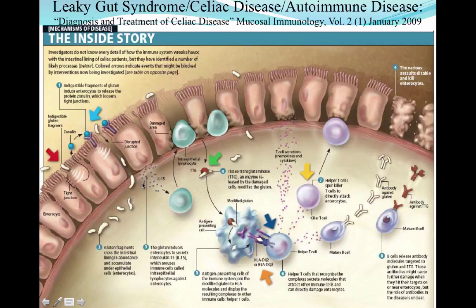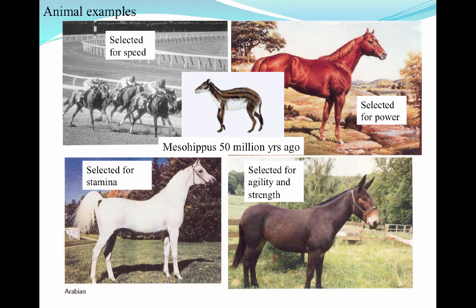In normal processes, indigestible fragments of gluten would be released through tight junctions and cross the mucosal layer of the gut system. What ends up happening is that gluten endocytes actually secrete certain autoimmune factors, and those autoimmune factors lead to health issues for people that produce abundant amounts of them. This is just one example of how we have changed the wheat product to now be less conducive to being digested by our system.